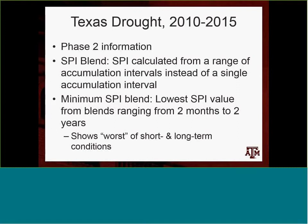We're going to take a quick tour of the Texas drought using phase two quality drought index information from our project. We're using one called the SPI Blend, which is the SPI calculated not just for a single time period — say six months or three months — but actually for a range of time periods, which has some nice properties. What we're going to show here is the minimum value of the SPI Blend from time periods ranging from two months to two years. So you can think of it as the worst level of drought, whether short term or long term.